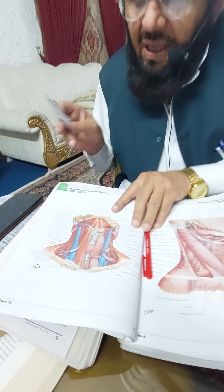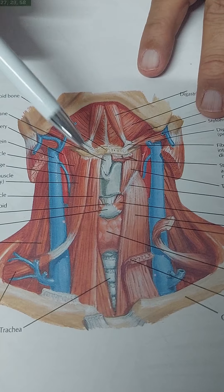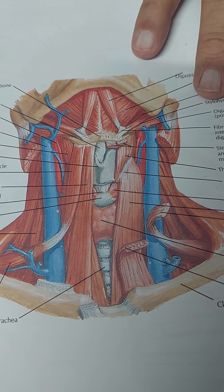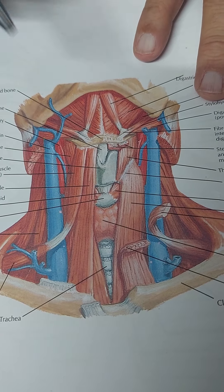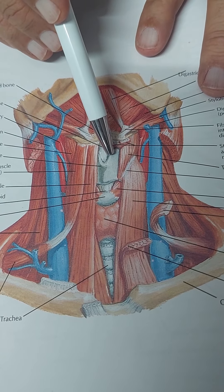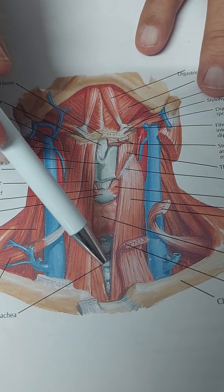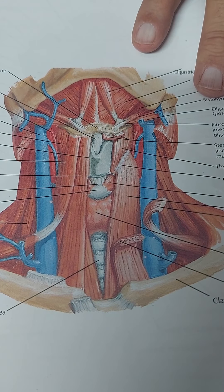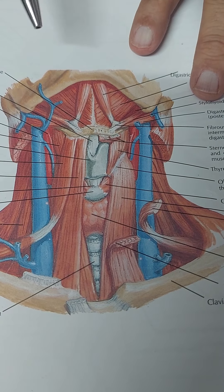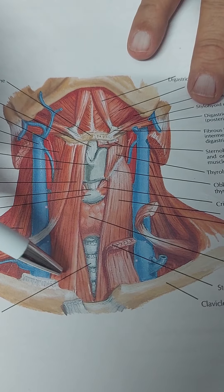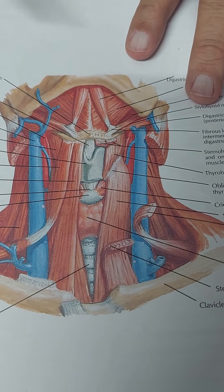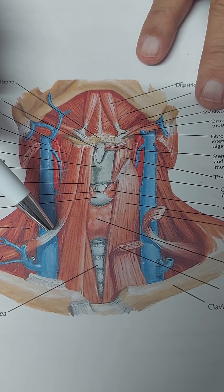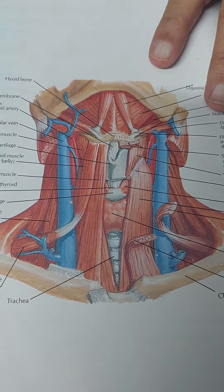This is the hyoid bone. This is the thyroid cartilage and over here this is the manubrium of the sternum. In the midline you can see the thyroid cartilage, then the trachea, and over here the thyroid gland. Posterior to the trachea lies the esophagus. Lateral to this, you can see the sternohyoid muscle running from the hyoid to the sternum. Lateral to that is the omohyoid — its superior belly, intermediate tendon, and inferior belly.